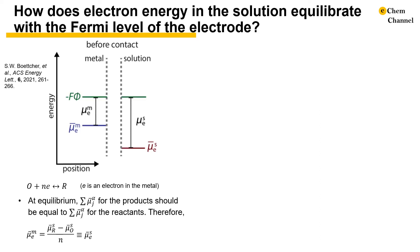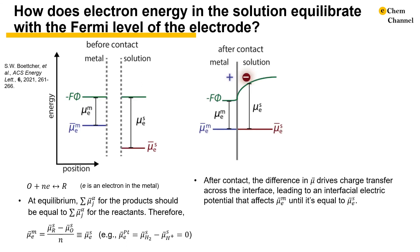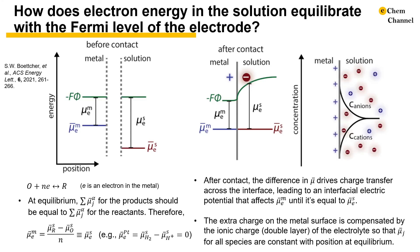This equation explains how a reference electrode works. For example, the platinum electrode in equilibrium with hydrogen gas and proton will have an electrochemical potential of zero, because the electrochemical potential difference between hydrogen gas and proton is defined as zero. Upon contact, the difference in the electrochemical potential of electrons leads to a charge transfer across the interface, leading to an interfacial electric potential that affects the electrochemical potential of electrons for the metal until it equals that of the solution. The charge transfer leaves the metal surface positive, which is compensated by the negative ionic charge in the electrolyte, forming a double layer. The concentration of compensating ions decreases with distance from the electrode such that the electrochemical potential of all species in the system is constant with position through the double layer and into the bulk electrolyte.